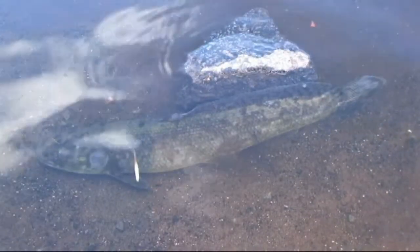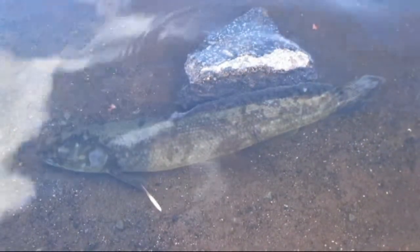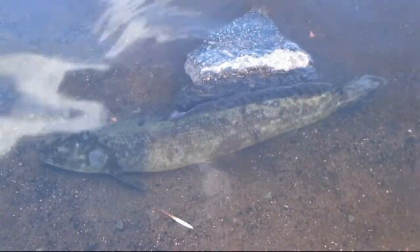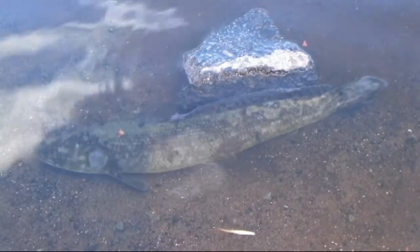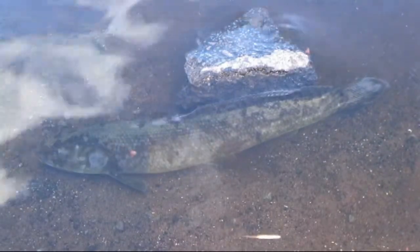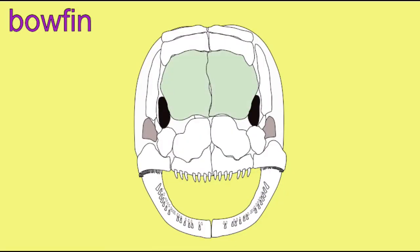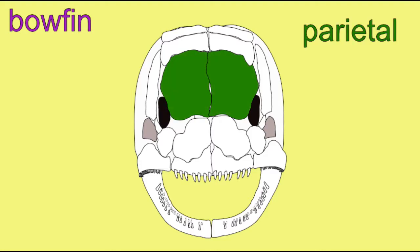Bowfin are a very primitive lineage of osteichthians, and therefore their skulls are interesting to compare for homology with the skulls of more advanced osteichthians, including humans.